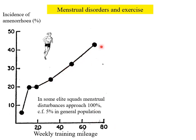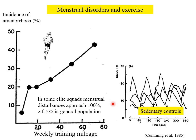But even when doing a lot of miles, it's only about 50% of women who show amenorrhea. If you take elite squads training for the Olympics, however, menstrual disturbances may be up to 100% of the population. What's the reason for that?